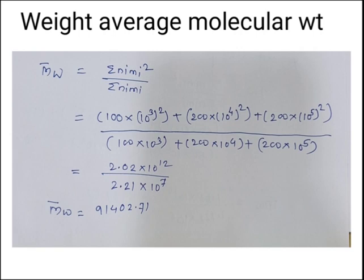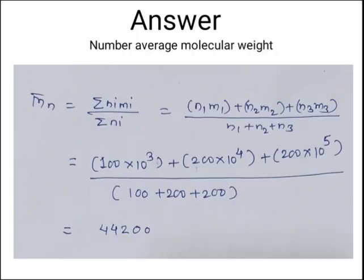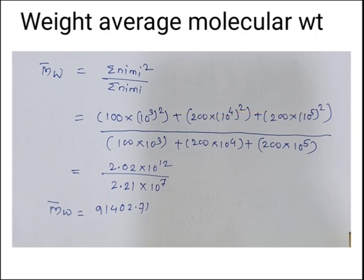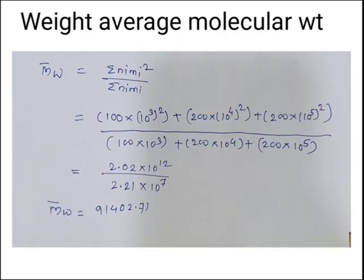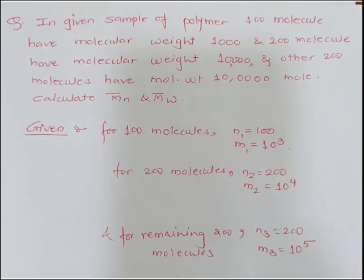The weight average molecular weight is calculated as Mw = (ΣNi·Mi²) / (ΣNi·Mi). Expanding: Mw = (100×(10³)² + 200×(10⁴)² + 200×(10⁶)²) / (100×10³ + 200×10⁴ + 200×10⁶). The answer is Mw = 91,402 grams. This is the weight average molecular weight of the given polymer.